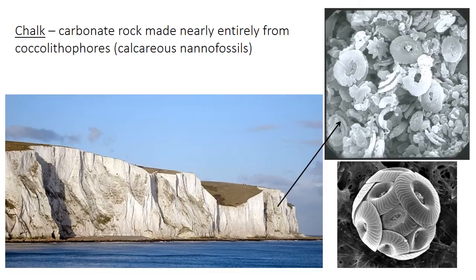One specific type of carbonate sediment is chalk, which is this white rock here, made pretty much exclusively from the shells of coccolithophores. Chalk is not restricted to the deep sea — it can form in continental shelf environments as well, as in these Cretaceous deposits at the famous White Cliffs of Dover. Incidentally, the Cretaceous gets its name from the abundant chalk deposits within it.